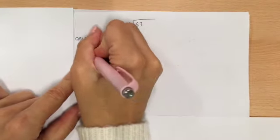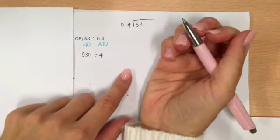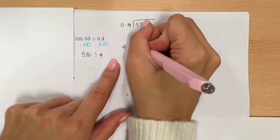So, I'm going to do 530 divided by 4, which actually is much more simple. So, if we do it in the traditional way...